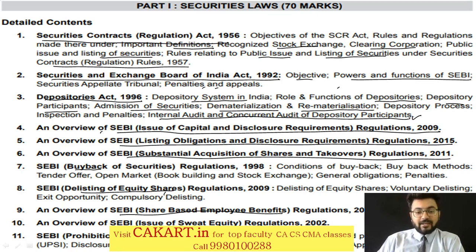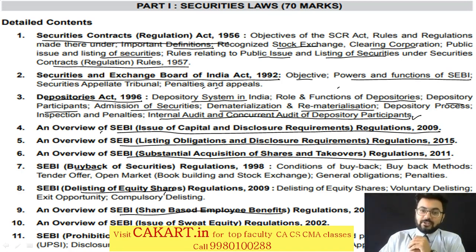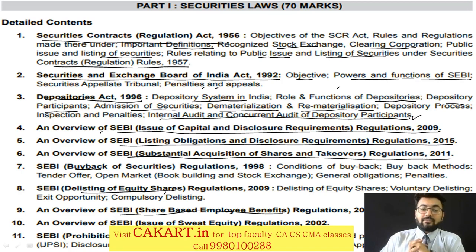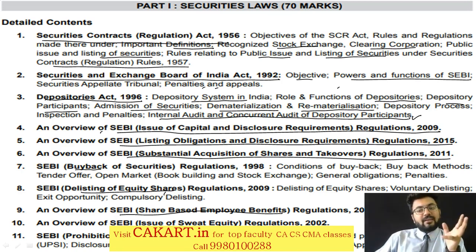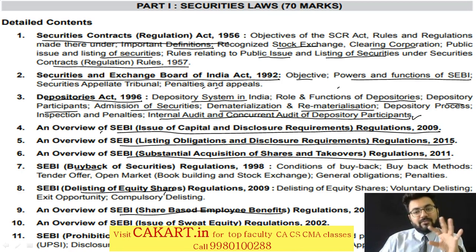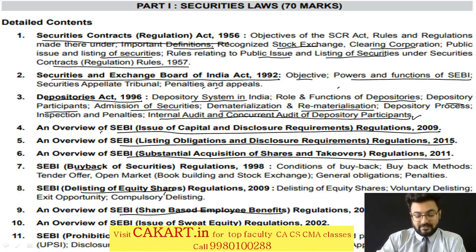Prohibition of insider trading - the person who is sitting at the KMP level has every kind of information about the company. If you transfer that information, you might be paid lakhs or crores just for passing on information. If you are found guilty, the penalty is three times the money you earned, or Rs. 25 crores, whichever is higher. The calculation is complex and we will cover that.